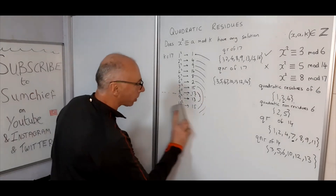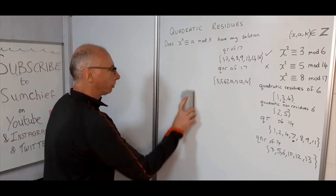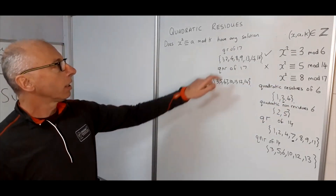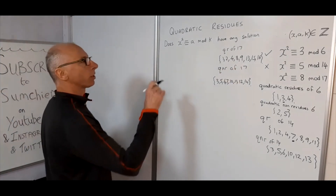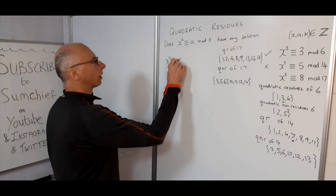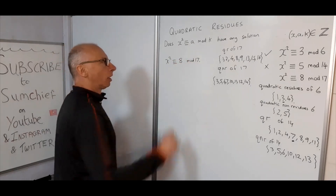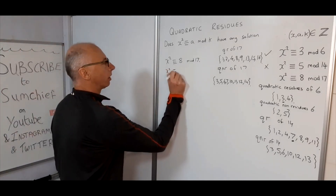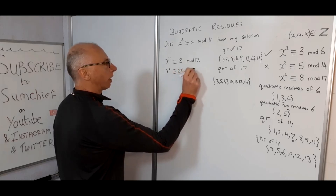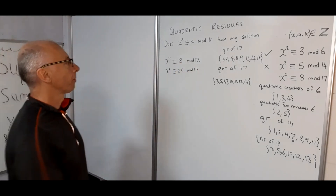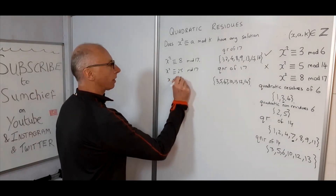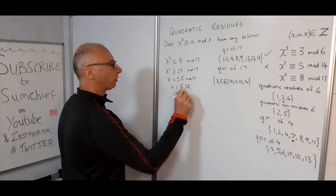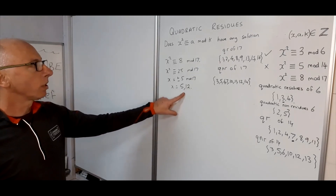Now to answer the original question: x² ≡ 8 (mod 17). Since 8 is a quadratic residue of 17, this has a solution. We note x² ≡ 25 (mod 17), and 25 is congruent to 8 mod 17. So x = ±5 (mod 17), meaning x = 5 or x = 12. Two solutions.